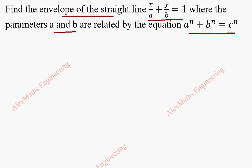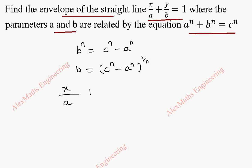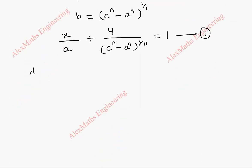we are going to take what is b^n from the given relation. b^n is c^n minus a^n. And from this, b is (c^n - a^n)^(1/n). When I substitute in the straight line, we get x/a + y/(c^n - a^n)^(1/n) = 1. Let's keep this as our first equation, and we are going to differentiate this first equation with respect to the constant a.